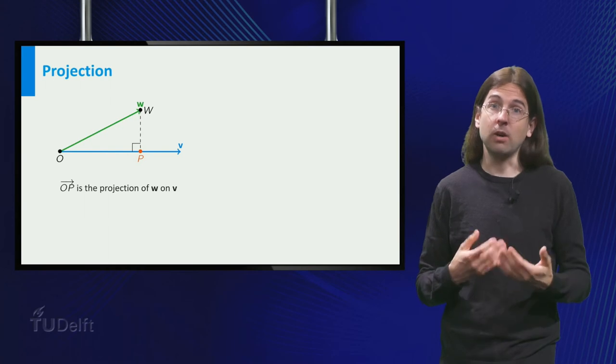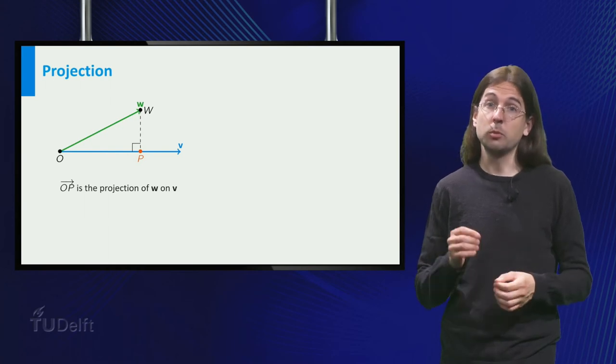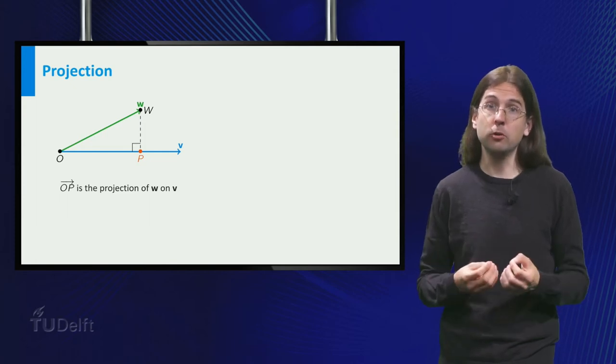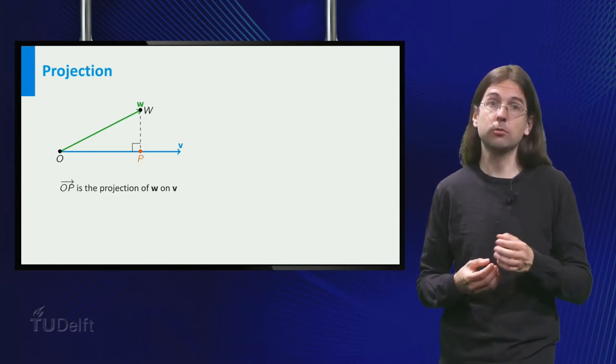This now gives a right angle triangle. The point p on the line through v is the end point of the so-called orthogonal projection of w onto v.